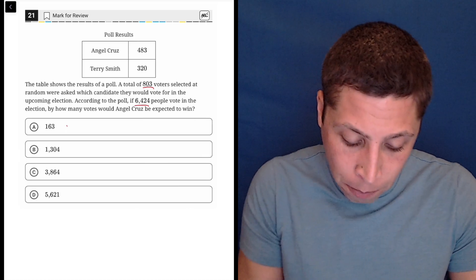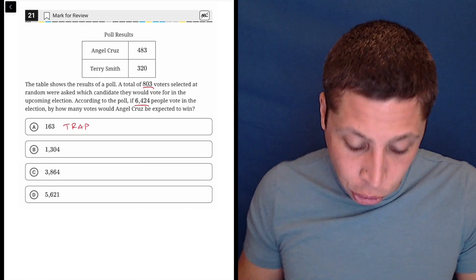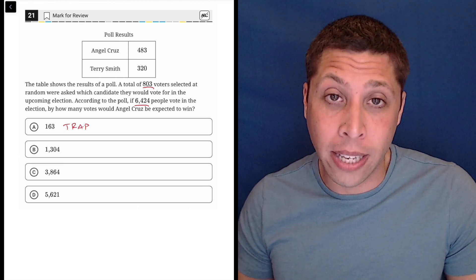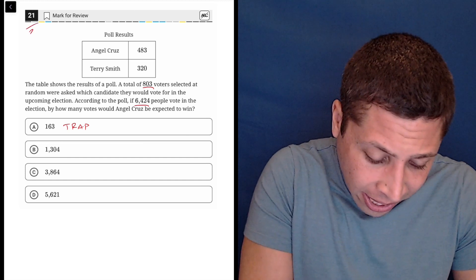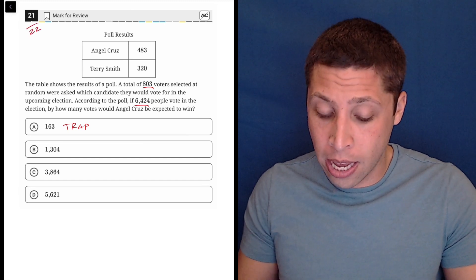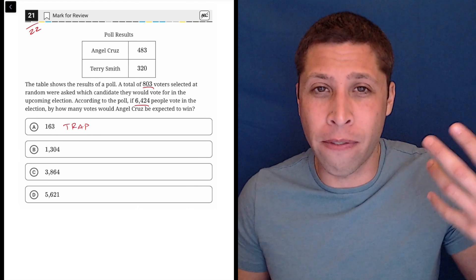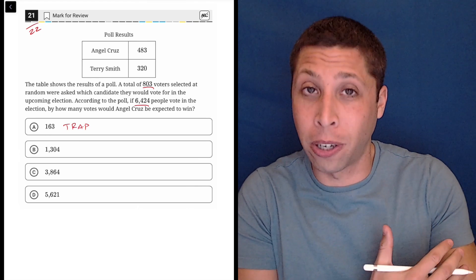So first and foremost, a big trap answer is choice A. That would just be from subtracting 483 from 320. That's way too easy. This is the second hardest question on the test supposedly, so it's not going to be a subtraction of two numbers, plus you didn't even factor in the 6,424.